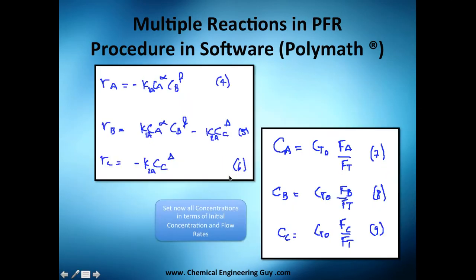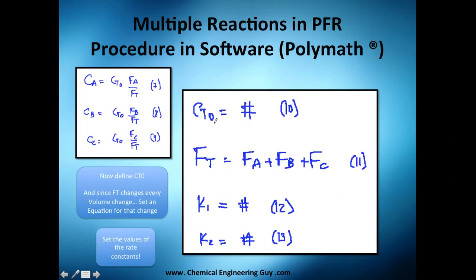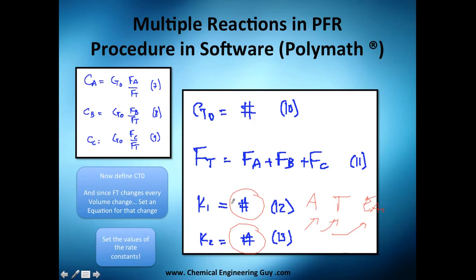Equations four, five, and six contain rate constants — k1A, k2A — which must be specified as constant values. If given the frequency factor, temperature, and activation energy, you set those as variables or constants and apply the Arrhenius equation. Since the reactor is isothermal, temperature doesn't change, activation energy doesn't change, and the frequency factor doesn't change — so these are just numbers.